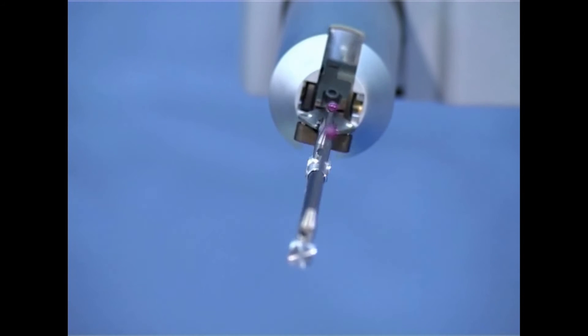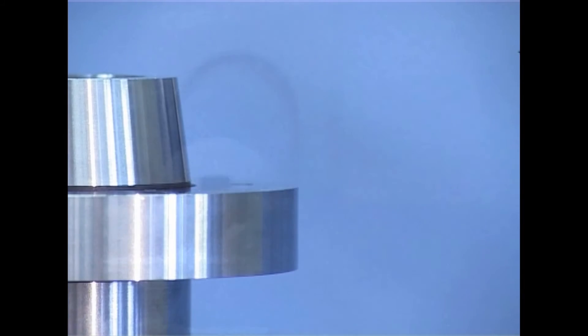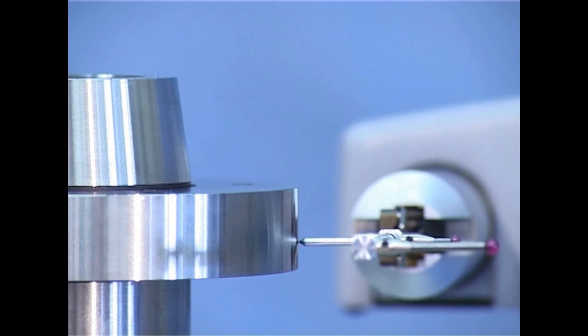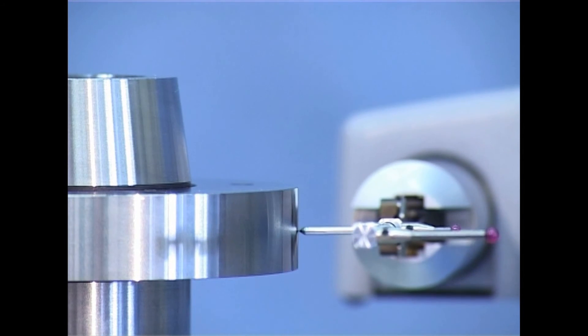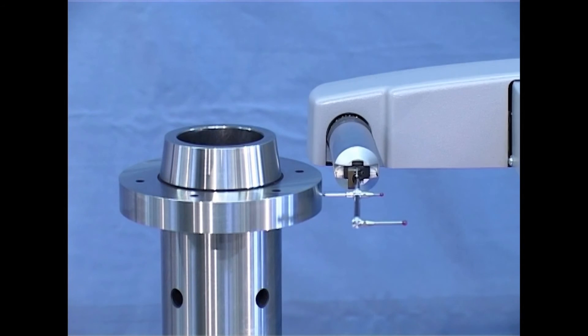Different probe tips must be used for standard form and roughness measurements. In Hommel-RoundScan, a CNC-controlled rotation and tilt module positions the ruby ball and the diamond tip anywhere on the workpiece. This is achieved by the scanning system active on both sides in connection with the 270 degrees rotation possibility of the tilt module.